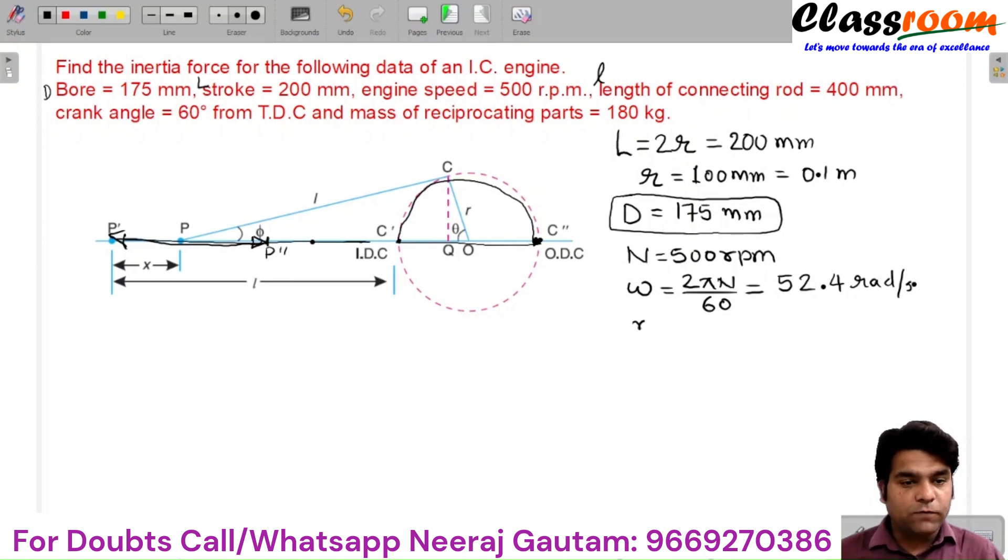The mass of the reciprocating component is given here, MR is 180 kg, and the angle theta, which is measured from inner dead center. And here the angle theta is measured from outer dead center. So this is the position of theta, which is 180 plus 60 degrees.